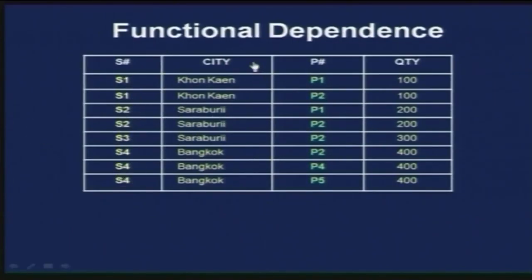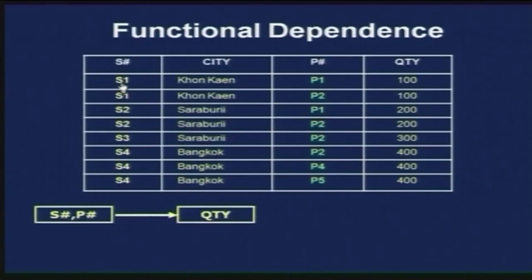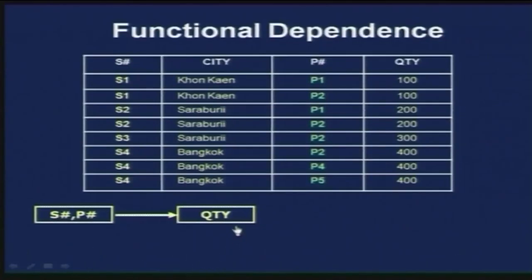Let us take another example with supplier number, city, product number, and quantity. Here, supplier number and product number together determine quantity. For example, S1 and P1 together cannot appear with different quantities — that combination uniquely determines the quantity value. Similarly, S4 appears with P2, P4, and P5 — for each such pair, the quantity is uniquely fixed. A functional dependency cannot be inferred automatically from a given relation; it must be defined explicitly by someone who knows the semantics of the attributes.